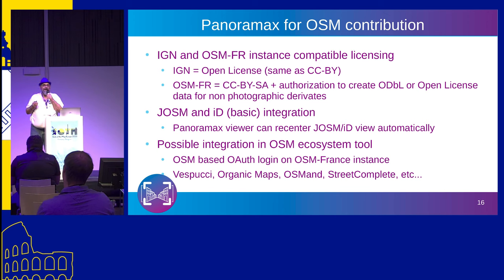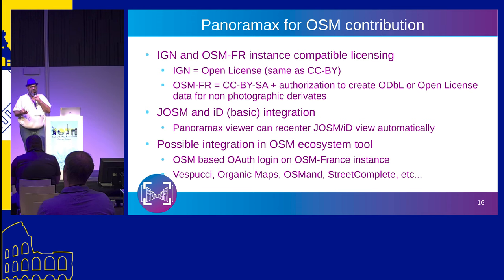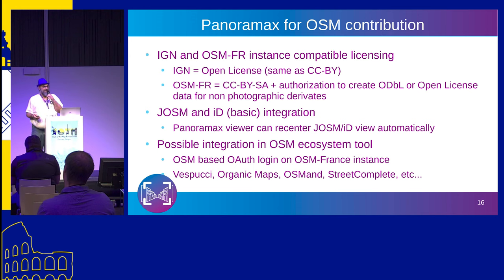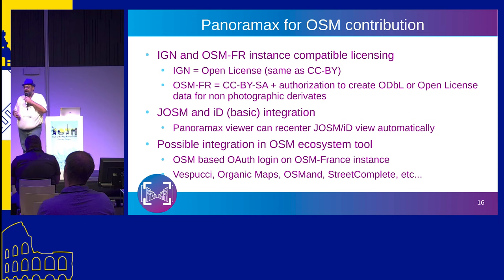I expect OSM-related mobile apps to implement viewing and uploading pictures to Panoramax. I would love to see, in Organic Maps, when you find a restaurant and there's no picture, the possibility to send a picture of it. StreetComplete could ask people to send a picture of something. It's quite easy to implement.